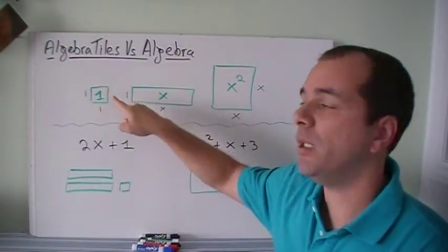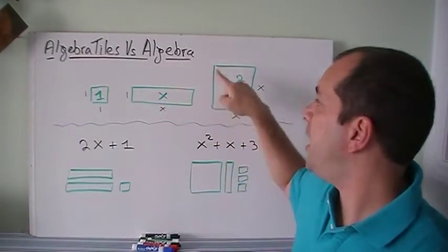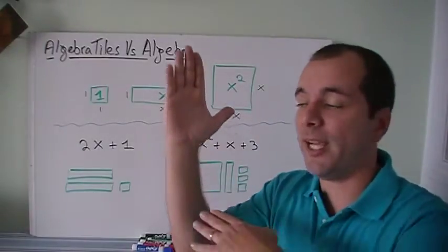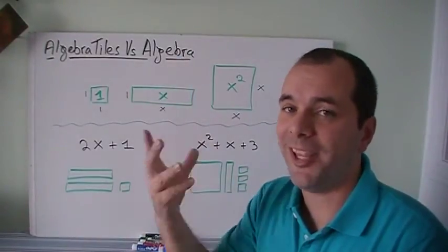It's kind of like the area. 1 times 1 is 1. 1 times x is x. And the larger tile, which is going to be x by x, that's going to be your x squared because that's the area.